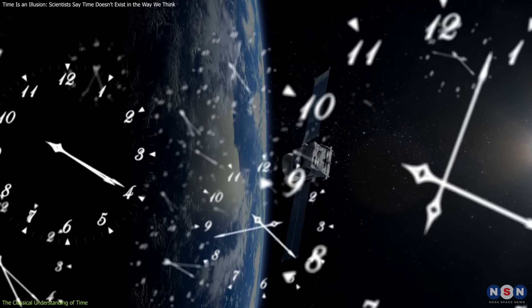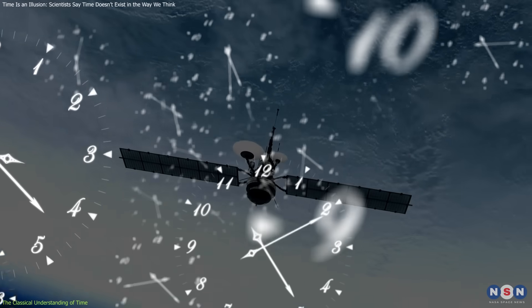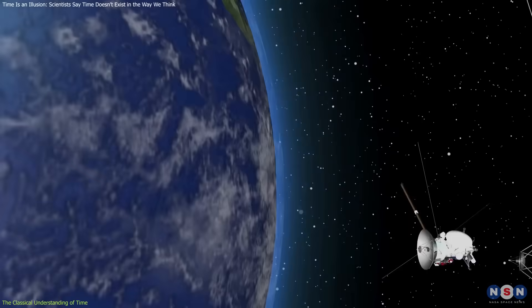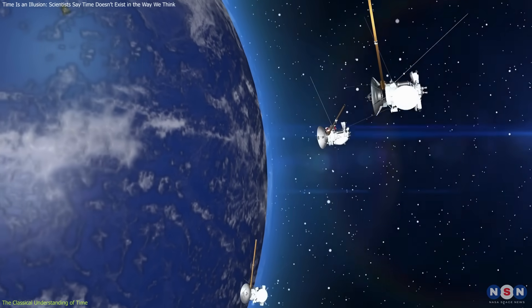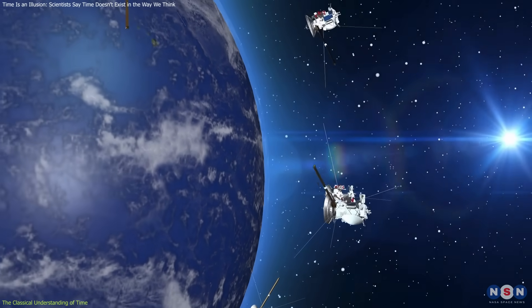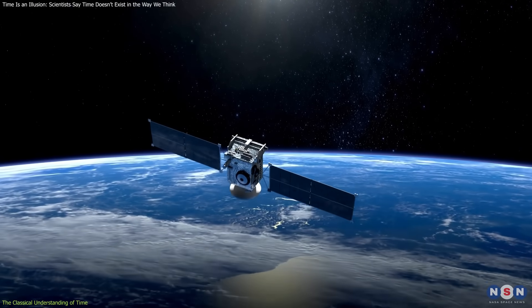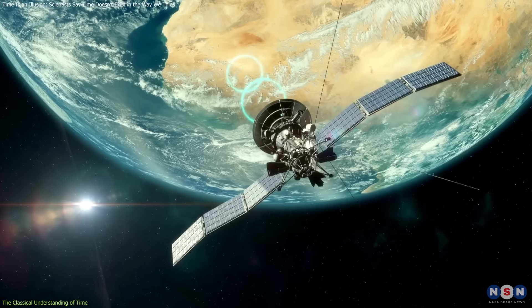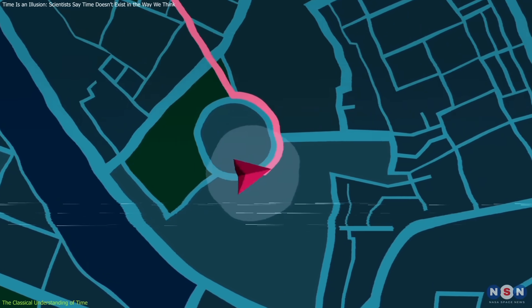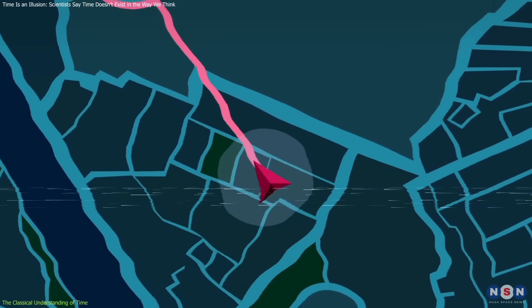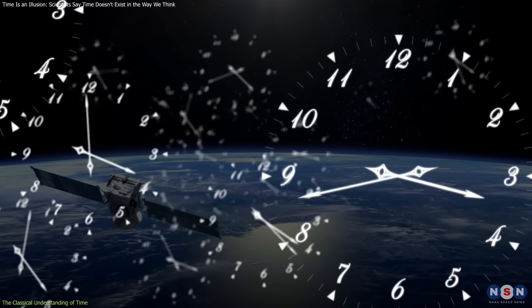According to Einstein's theories, the reduced gravity would make the satellite clocks run faster while their high speed would make the clocks run slower. The net effect is that time on these satellites runs slightly faster than on Earth's surface. If uncorrected, this discrepancy would lead to navigational errors accumulating at a rate of about 10 kilometers per day. To ensure accuracy, GPS systems account for these relativistic time dilations, adjusting the satellite clocks accordingly.